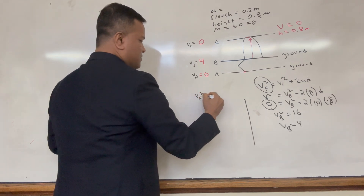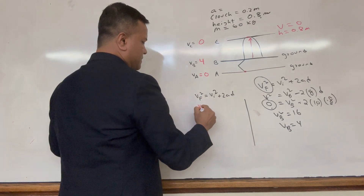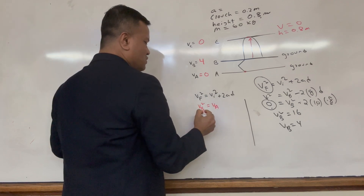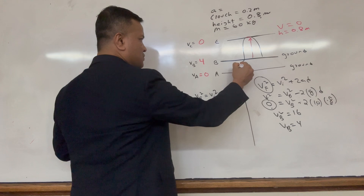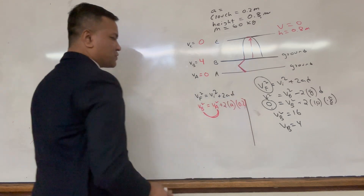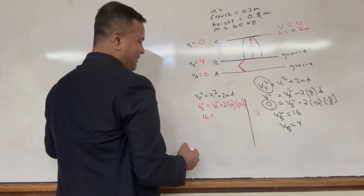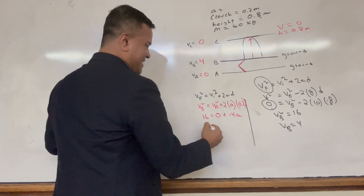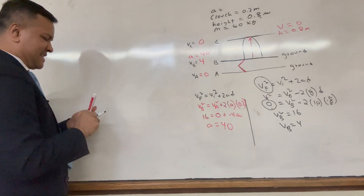Now let's find the acceleration during the crouch phase from location A to location B. Using VF² = VI² + 2aD, with VB²=16, VA=0, and D=0.2 meters (the crouch distance), we get 16 = 0 + 0.4a, so the acceleration is 40 m/s². This completes the kinematics portion.